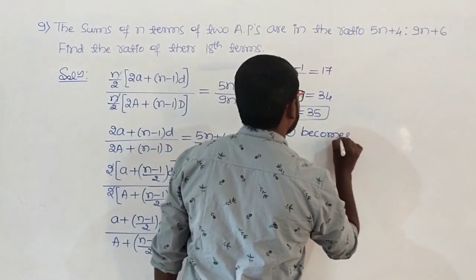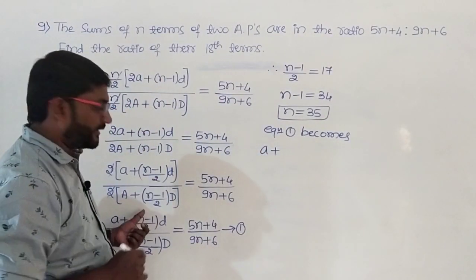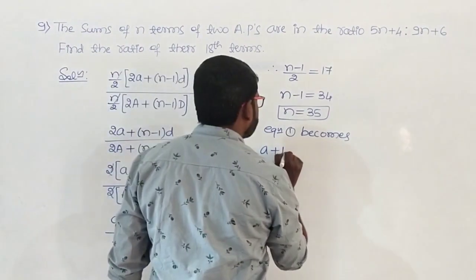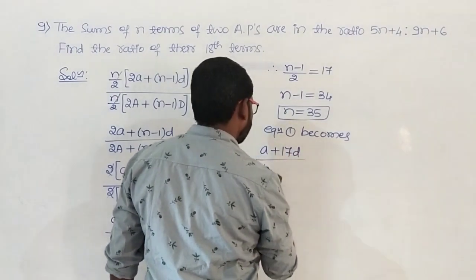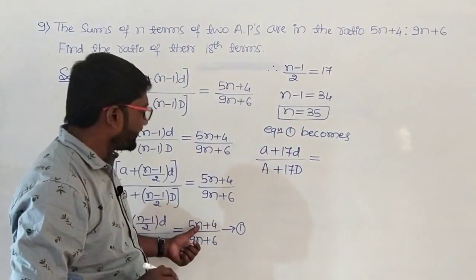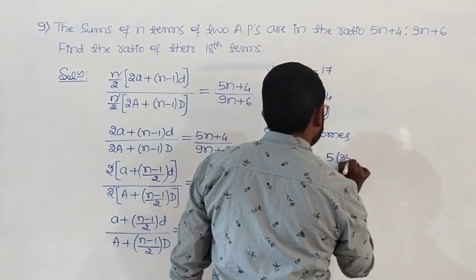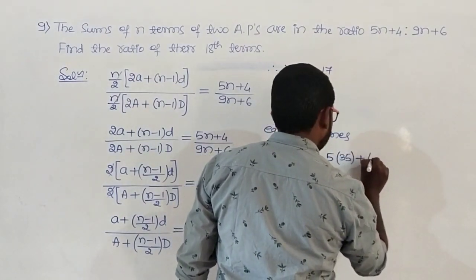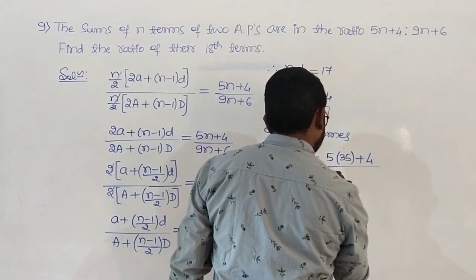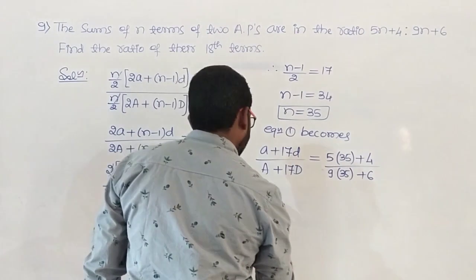Substituting n equals 35: 35 minus 1 is 34, 34 by 2 is 17. So we get a plus 17d divided by A plus 17D. Now replace n by 35 in the right-hand side: 5 into 35 plus 4, divided by 9 into 35 plus 6.